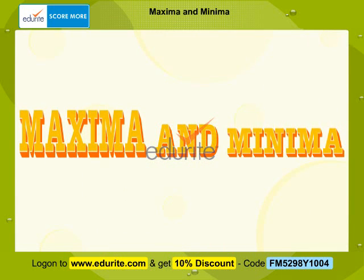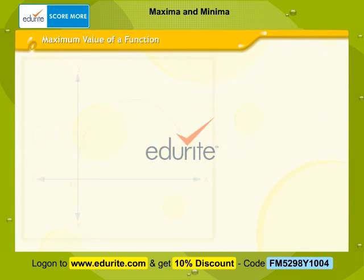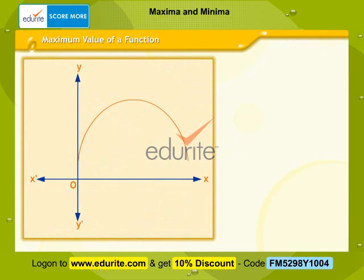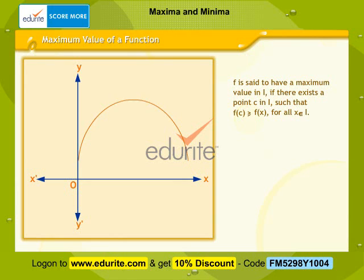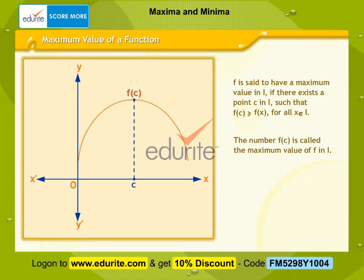Maxima and minima. Let f be a function defined on an interval I. f is said to have a maximum value in I if there exists a point c in I such that f(c) is greater than or equal to f(x) for all x belonging to I. The number f(c) is called the maximum value of f in I. The point c is called a point of maximum value of f in I.